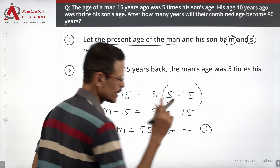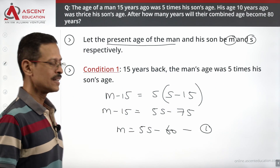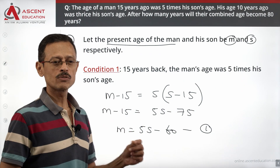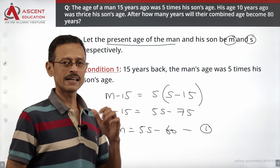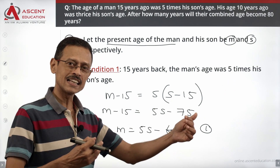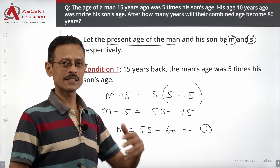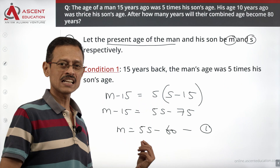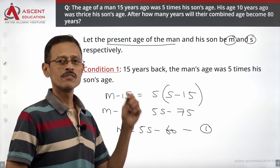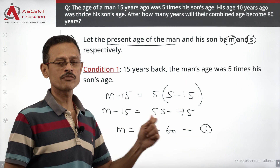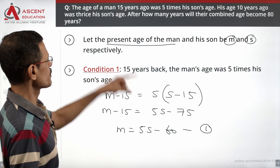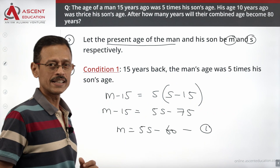We will call this equation 1. In equation 1: m is equal to 5s minus 60. Let's remember this value. From the first piece of information we have got one equation.